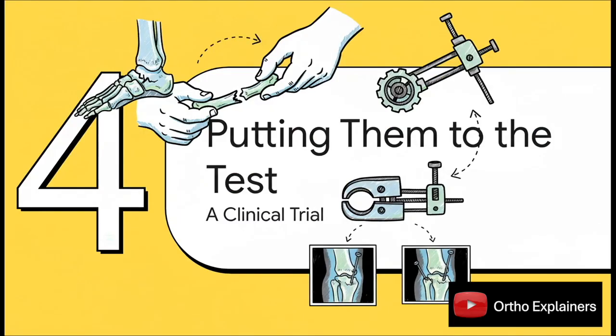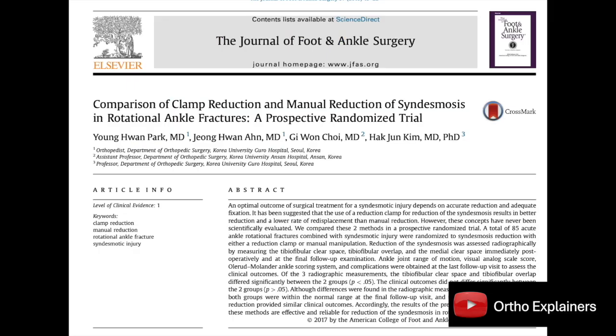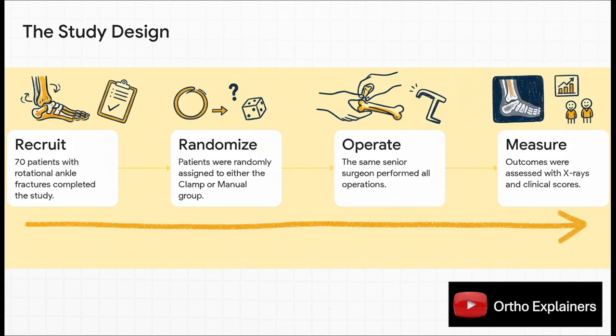Well, in medicine, there's really only one way to settle a debate like this. You've got to put it to the test with a serious scientific study, a proper head-to-head clinical trial to see which method really comes out on top. So researchers in Korea set up the perfect experiment. They found 70 patients with this exact type of ankle injury. Then they randomly put them into one of two groups. One group got the clamp fix. The other got the manual hands-on fix. And here's a key detail. The same senior surgeon performed all the operations. That's huge for consistency.